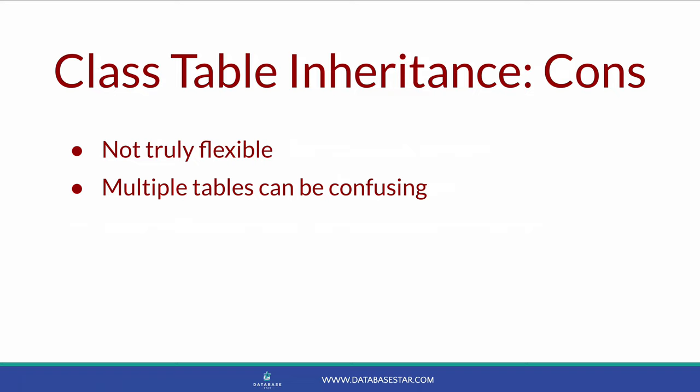The disadvantage of Class Table Inheritance is that it's not truly flexible — users can't add their own custom columns and will need to use an existing column. Having multiple tables for different types of a record can also be confusing. It can make queries harder to write and could mean more complex logic in your SQL and your application. But this is another solution to consider.